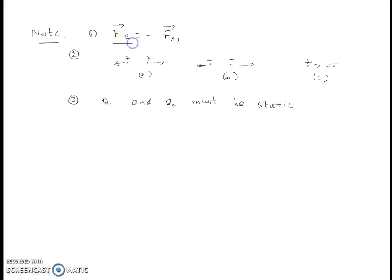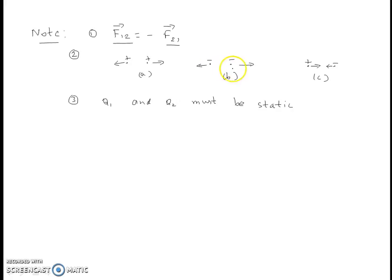F12 is the force exerted by charge Q1 on charge Q2, and F21 is the force exerted by charge Q2 on Q1. They are equal and opposite — that is, they have the same magnitude but opposite direction. Another point to be noted is that if you have two charges of the same polarity, both positive or both negative, the forces are repulsive. But if one charge is positive and the other is negative, then it is an attractive force. Also, both charges Q1 and Q2 must be static.